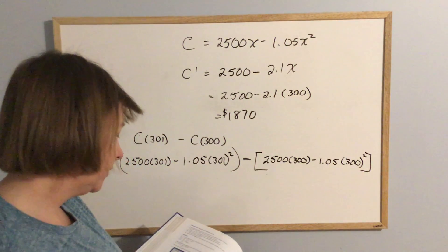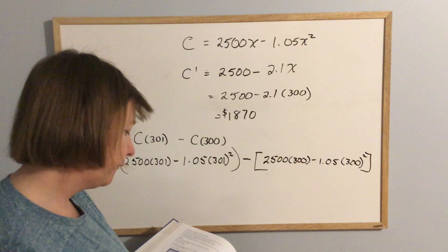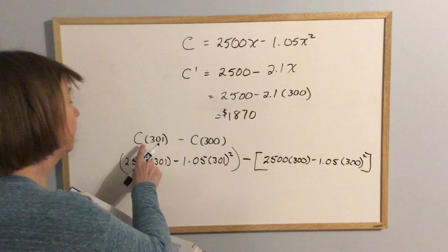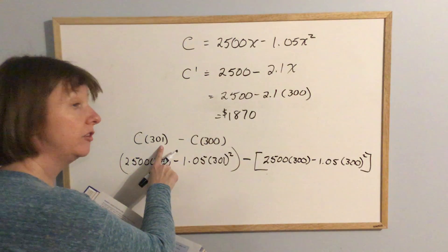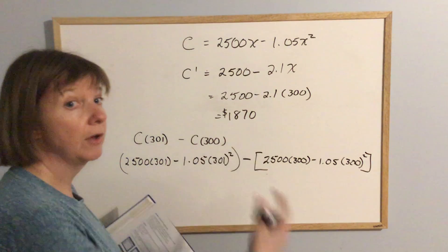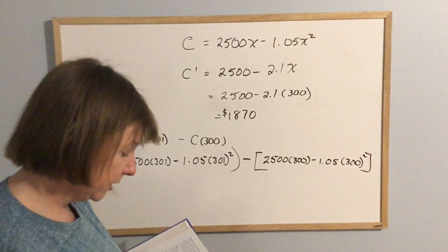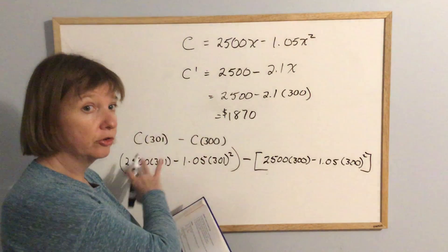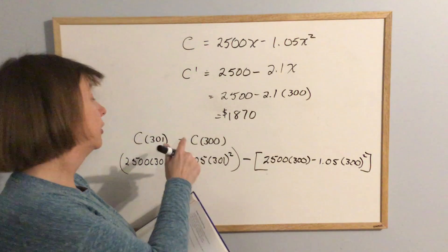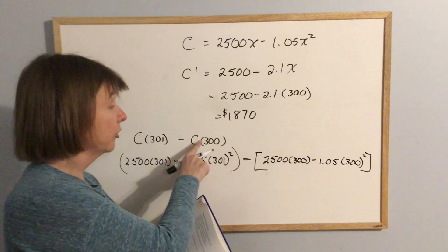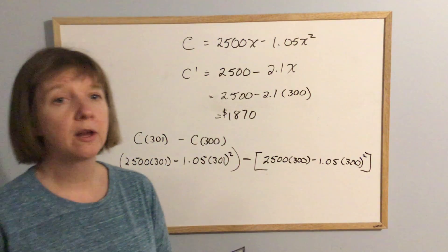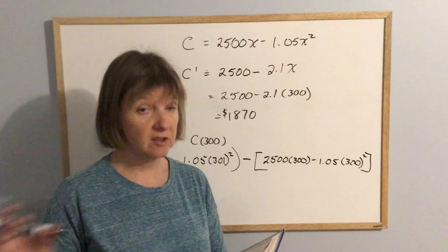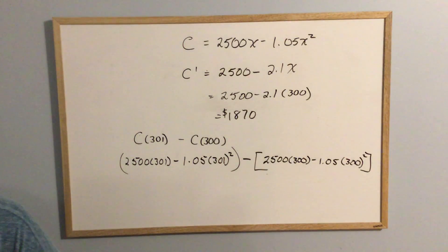Question 2c is exactly the same approach: find the cost of the 5501st TV by computing C(5501) − C(5500) using the cost formula for question 2. Plug in 5501 and subtract 5500 to find what it costs to make that 5501st TV.